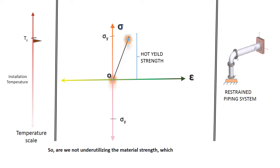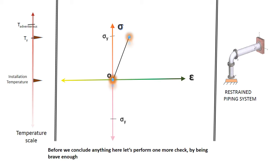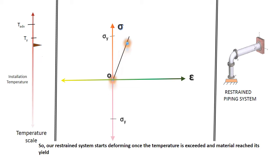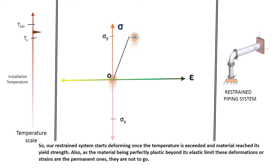So are we not under-utilizing the material strength? The strength which we have seen is approximately twice that of the yield strength based on its operational ability. Before we conclude anything here, let's perform one more check by being brave enough and letting our material experience temperature which will take it beyond its yield strength. So our restrained system starts deforming once the temperature is exceeded and material reaches its yield strength. Also, as the material being perfectly plastic beyond its elastic limit, these deformations or strains are the permanent ones.